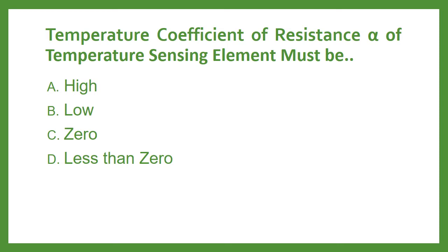The temperature coefficient of resistance alpha of a temperature sensing element must be: Option A High, Option B Low, Option C Zero, or Option D Less than zero. The answer is Option A: High.